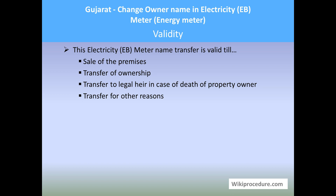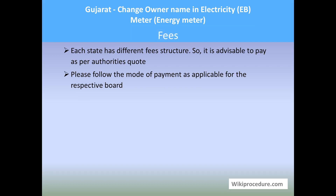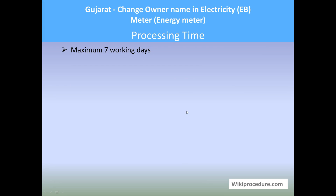Validity: this electricity meter name transfer is valid till the sale of the premises, till transfer of ownership, till transfer to a legal heir in case of death of the property owner, or till transfer for other reasons. Fees: each state has a different fee structure, so it is advisable to pay as per the authorities' guidance and follow the mode of payment applicable for the respective board. Processing time: maximum seven working days.